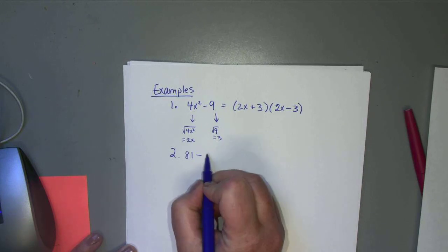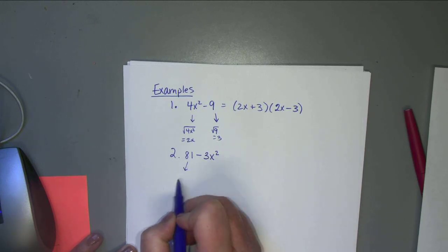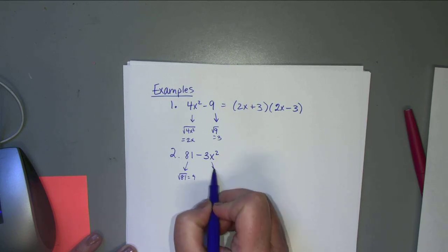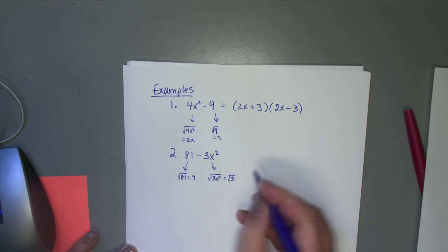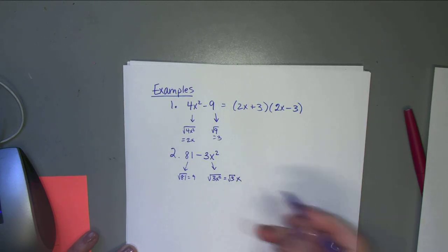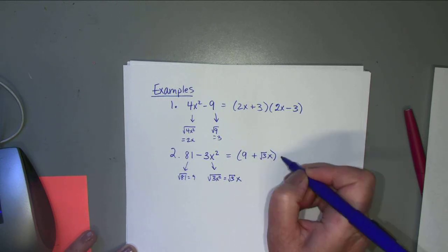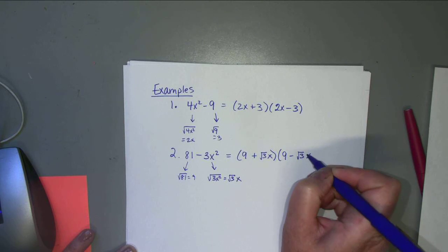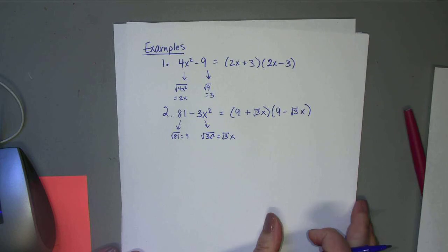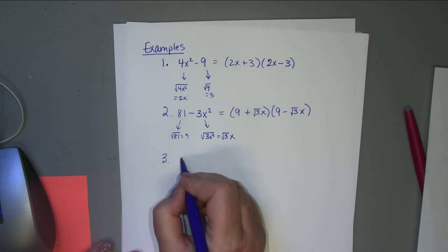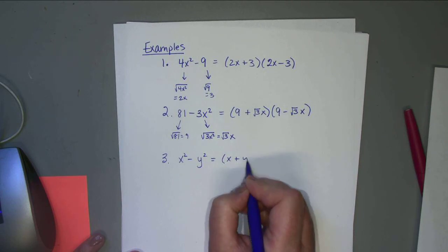Another example: 81 - 3x². There's a minus sign. The square root of 81 is 9. The square root of 3x² doesn't work out nicely — it's √3 times x. So this factors as (9 + √3·x)(9 - √3·x). In general, x² - y² factors as (x+y)(x-y).